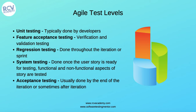The next level is acceptance testing, which is usually done by the end of the iteration or sometimes after it. Acceptance testing takes place very close to the end of the iteration, or in the next iteration. It includes user, operational, regulatory, or contract acceptance testing, and may also involve alpha and beta testing depending on the product. All these test levels are part of the same iteration in agile, unlike the traditional approach where exit criteria of one test level became the entry criteria for another.